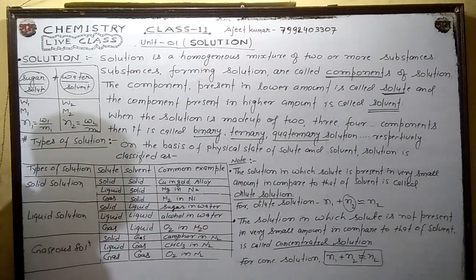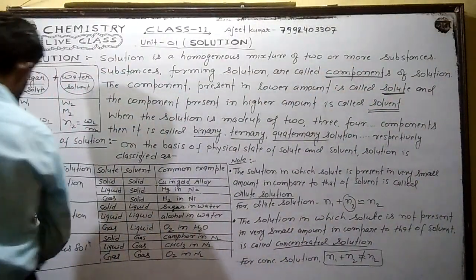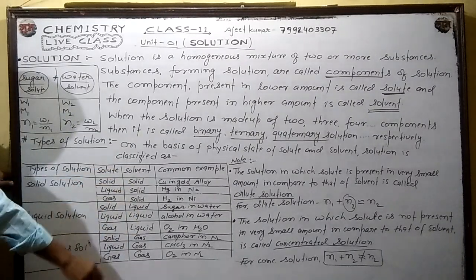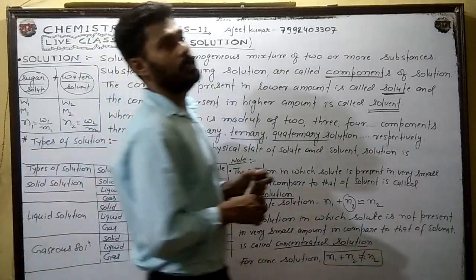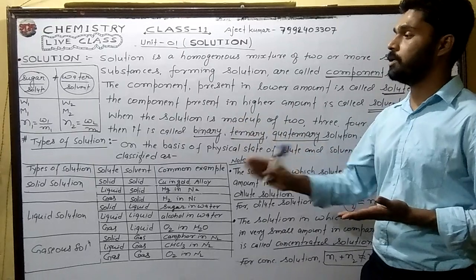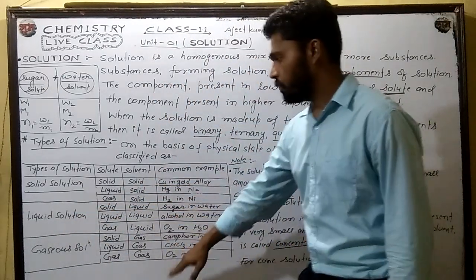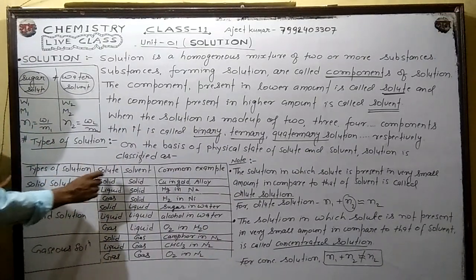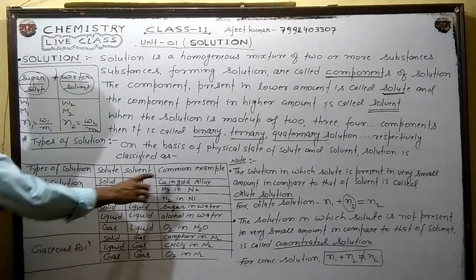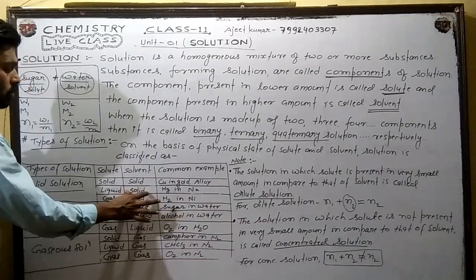Types of solution on the basis of physical state of solute and solvent: solutions are classified as solid solution, liquid solution, and gaseous solution. The classification is based on the physical state of the solvent. A solid solution has a solid solvent, a liquid solution has a liquid solvent, and a gaseous solution has a gaseous solvent. Based on the physical state of the solute, we can further name them solid-solid, liquid-solid, or gas-solid solutions.